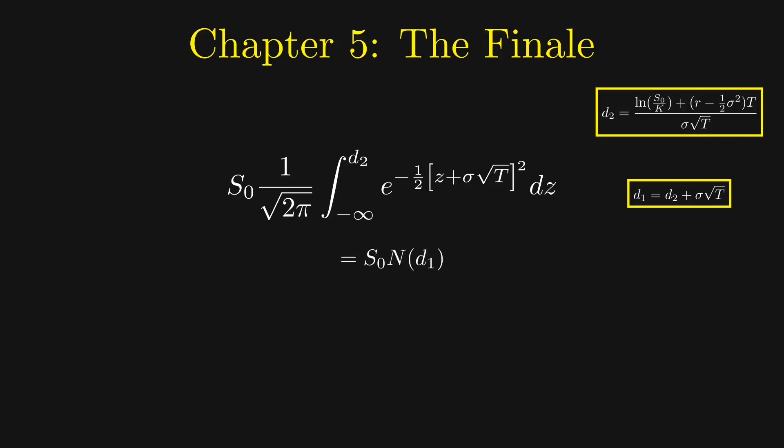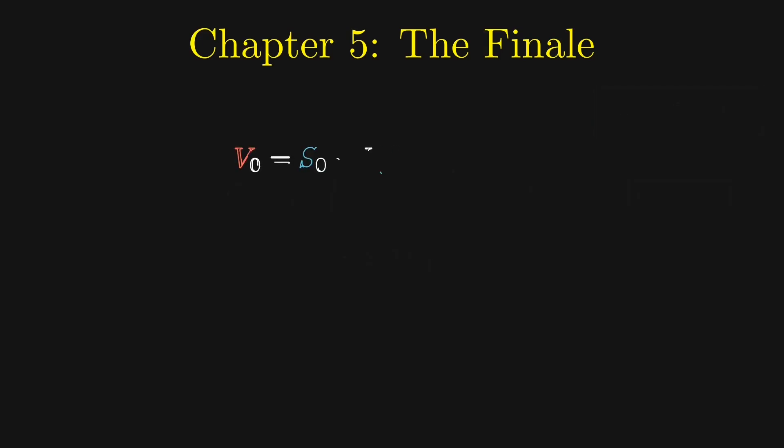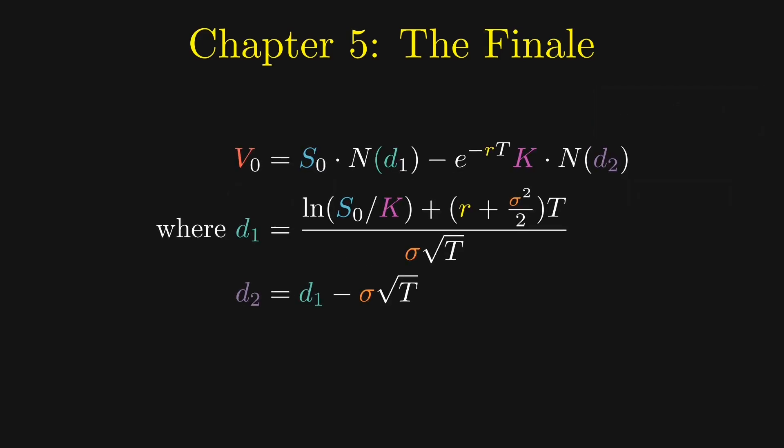Finally, we get S_0 times N of d_1. Combining the results, we get the Black-Scholes formula for the call option at time 0.